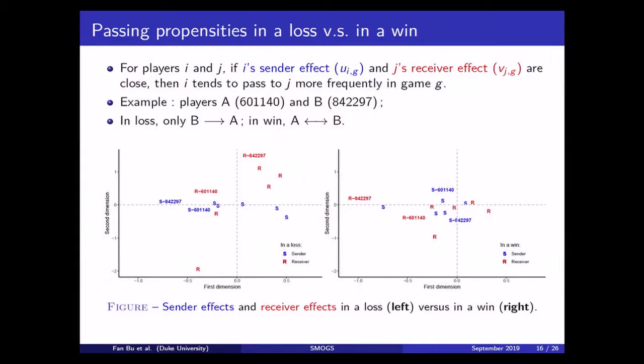So, for two players, player i and player j, if i's blue point is close to j's red point, then there's a very high propensity for i to send a pass to j in that particular game. So, let me walk you through this process by showing you an example of two players.